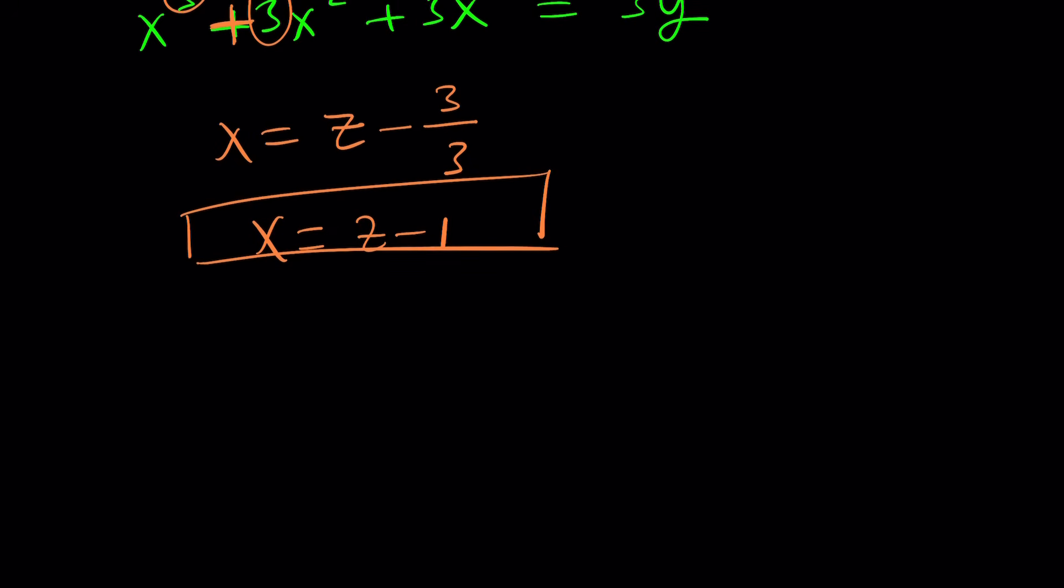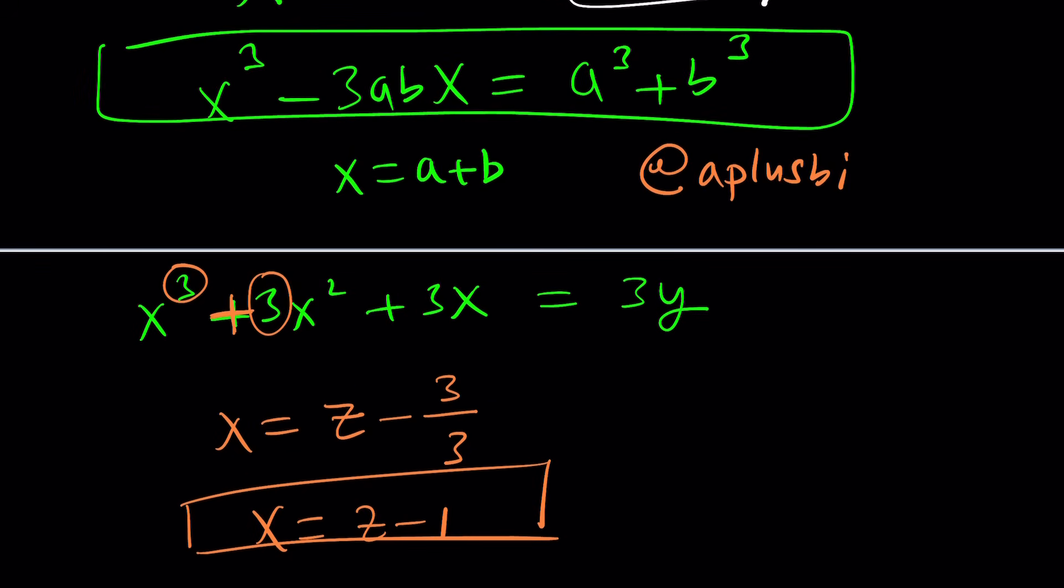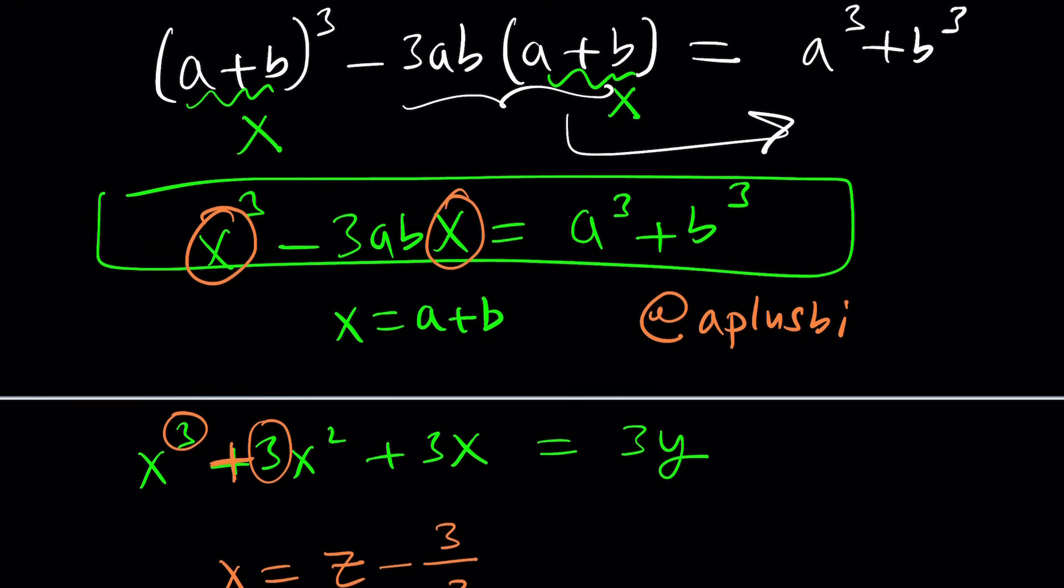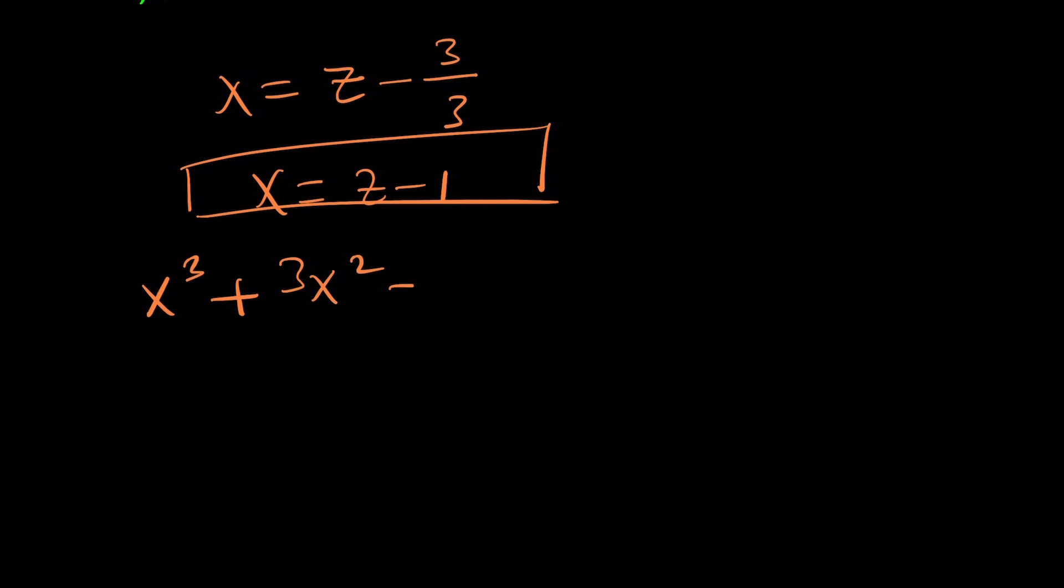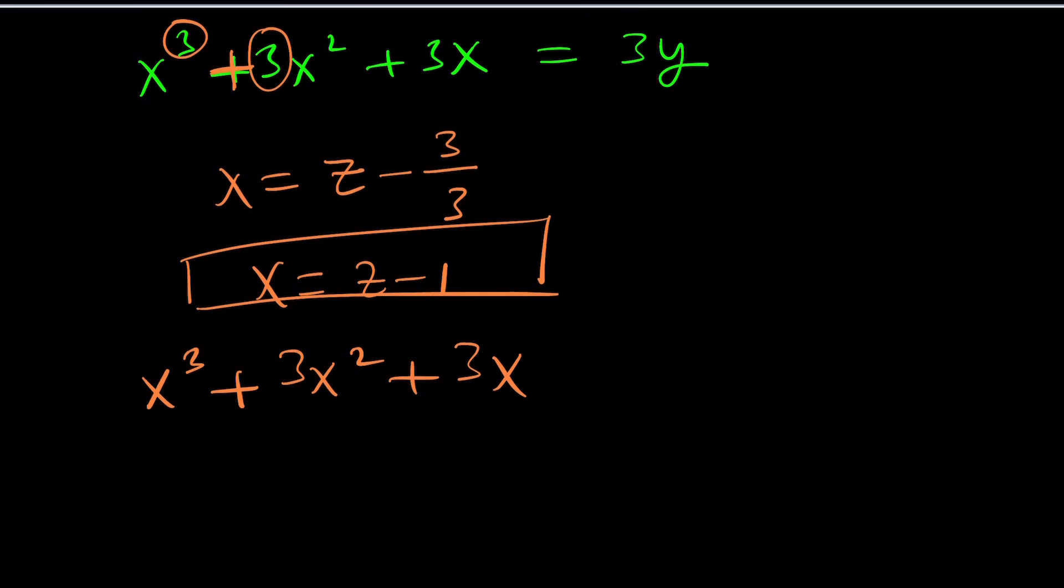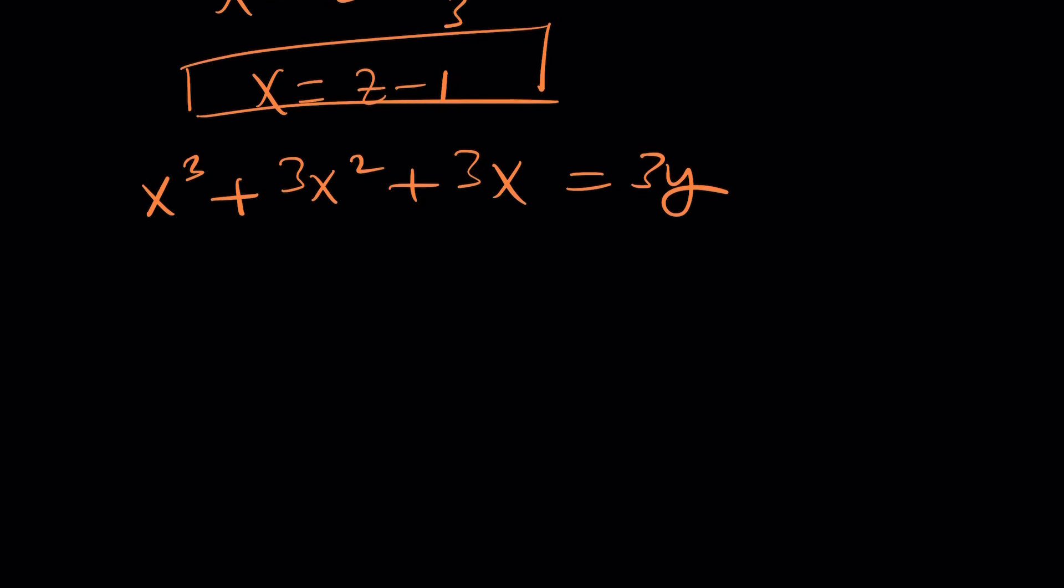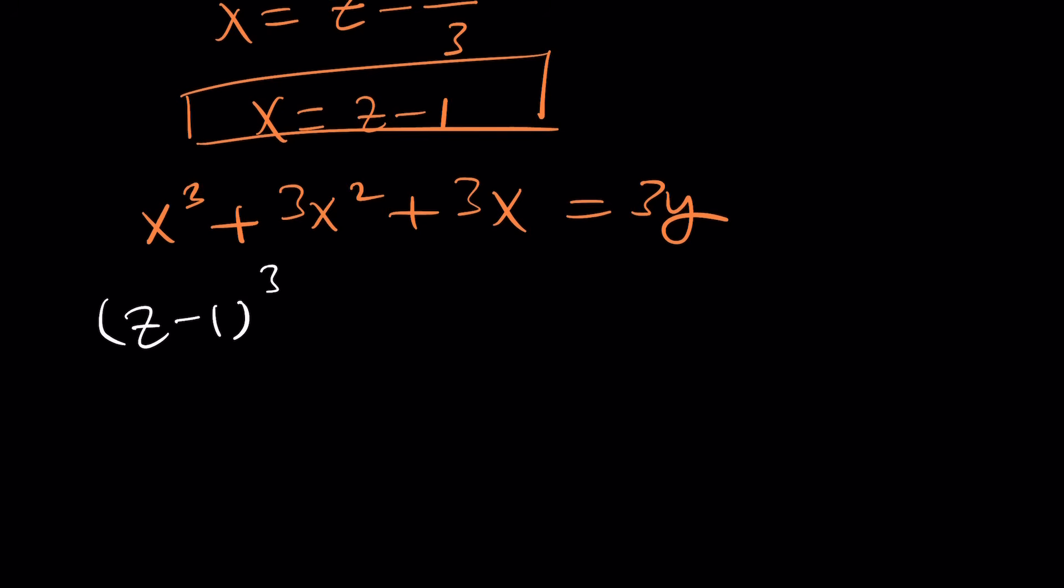If you look at this equation, the variable doesn't have a quadratic term—we have x³ and x, that's it. That's how the Italian mathematicians—Cardano, Ferrari, Tartaglia, whoever you want to attribute it to—tackled cubic equations many years ago. Let's take this equation and replace x with z - 1. This is the general formula. Let's replace x everywhere with z - 1. We have to do the work.